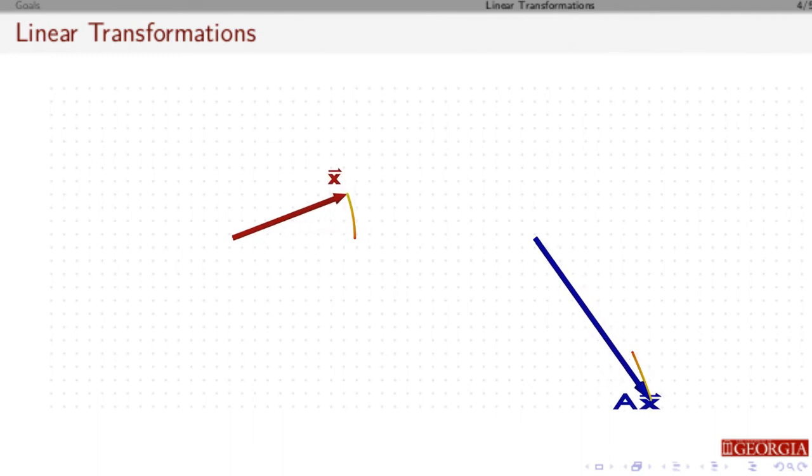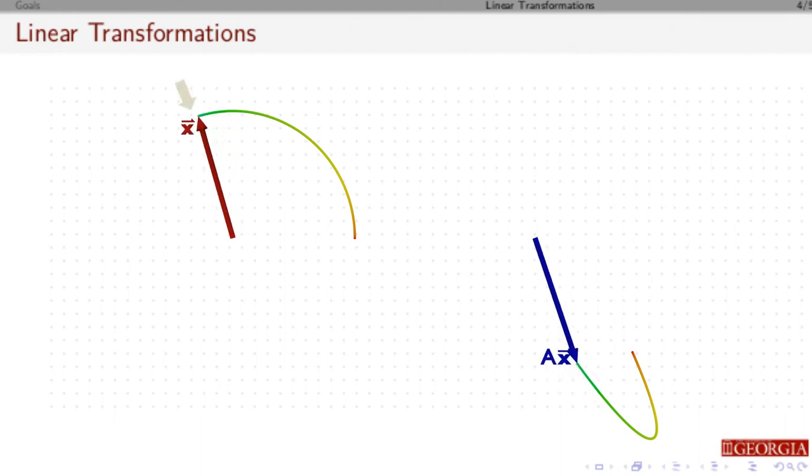I can do this for all of the vectors of length 1. So if I rotate that vector x, and if I look at this direction right here, we notice that it was in the same direction but just flipped.